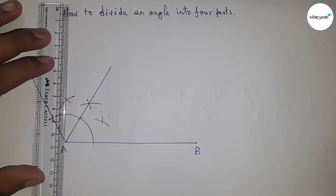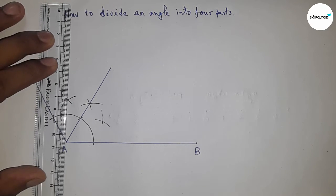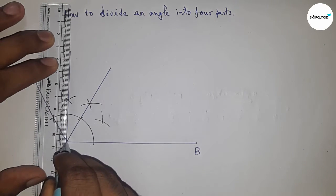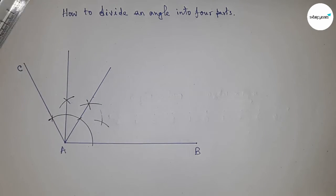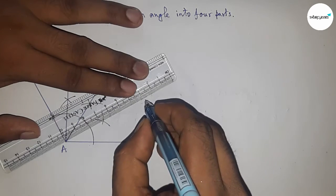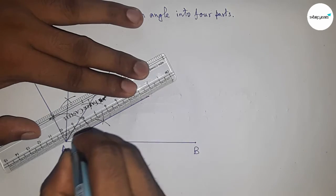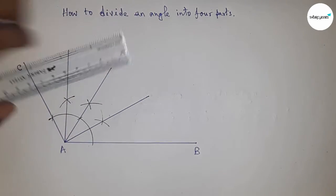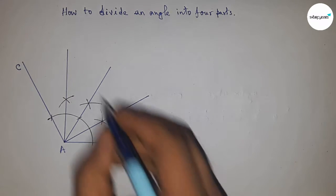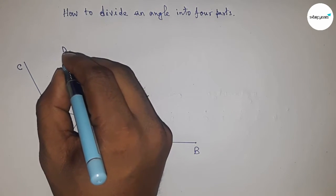Bisecting this angle by this way. Joining this point and joining this point. We know that if we divide 120 degrees into four parts, all angles will be 30 degrees each.